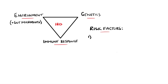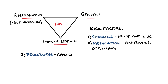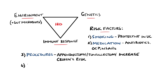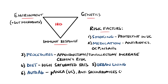Risk factors include smoking, which is actually protective in ulcerative colitis, as well as certain medications including antibiotic exposure, the oral contraceptive pill, and non-steroidal anti-inflammatories. Procedures such as tonsillectomy and appendicectomy seem to increase the risk of Crohn's disease. A diet rich in saturated fats and living in more urbanised regions are also risk factors. There is also implication of autoantibodies, with pANCA in ulcerative colitis and anti-Saccharomyces cerevisiae antibodies in Crohn's disease.